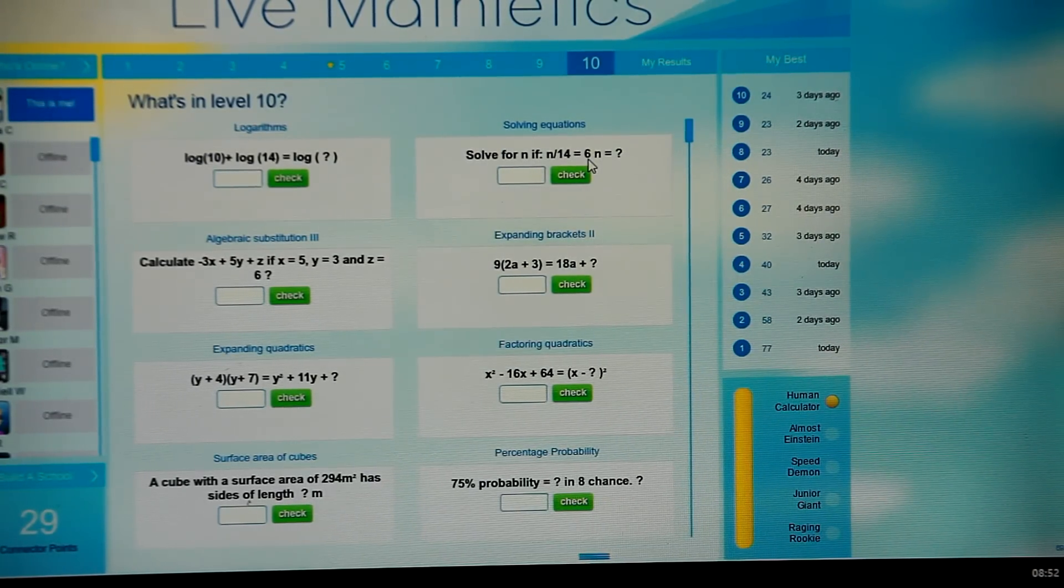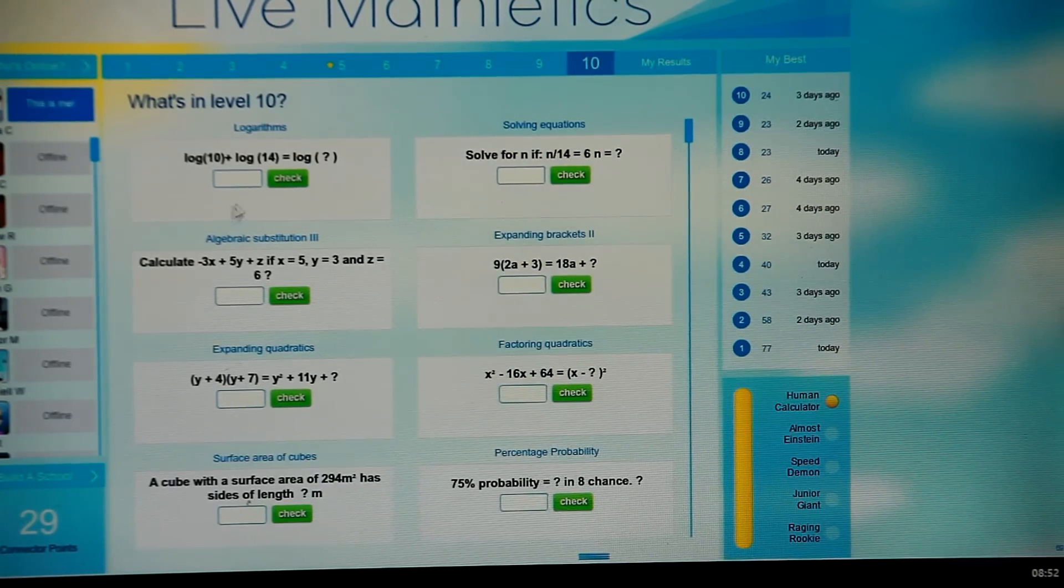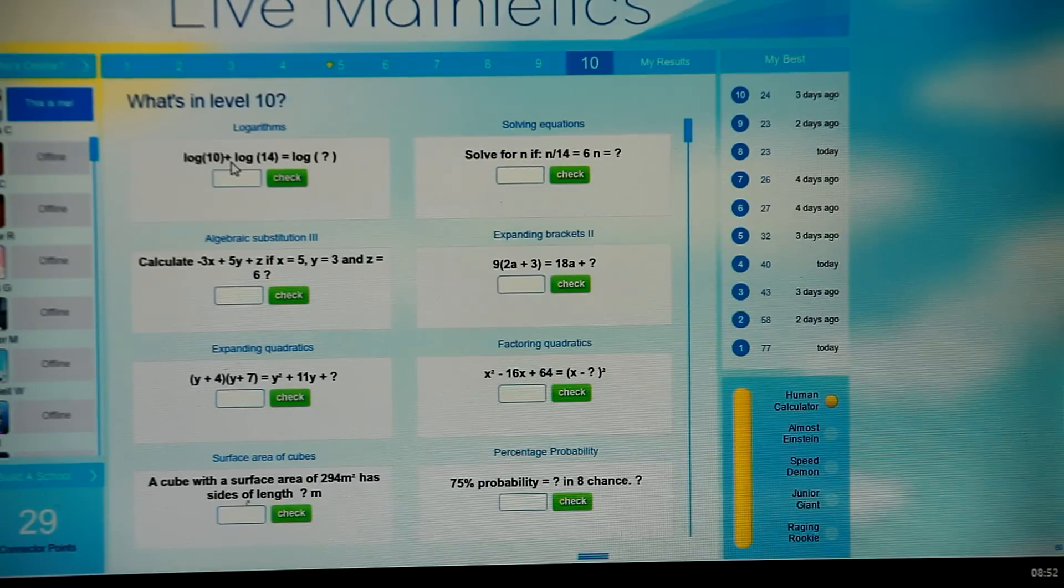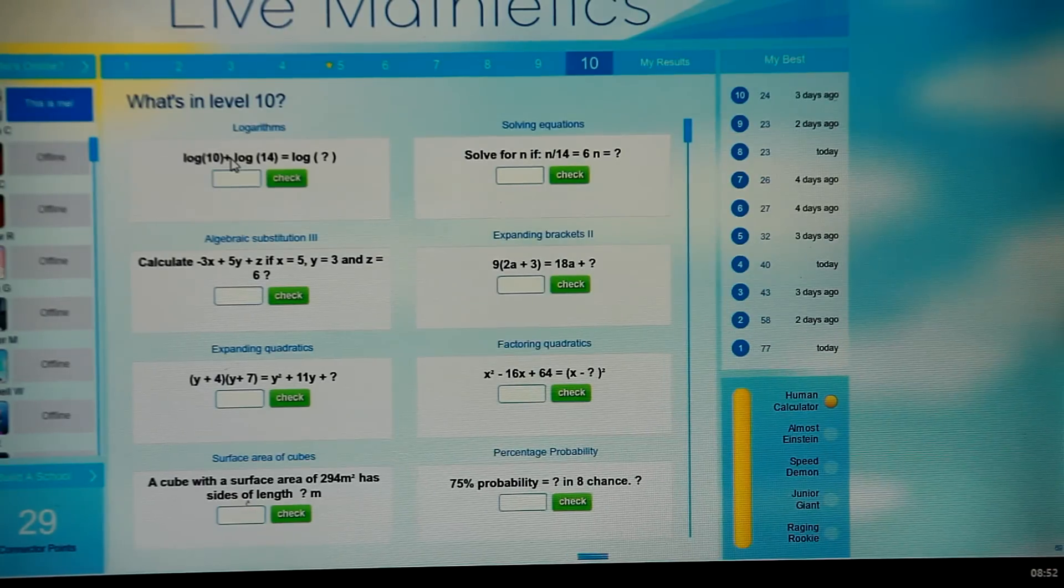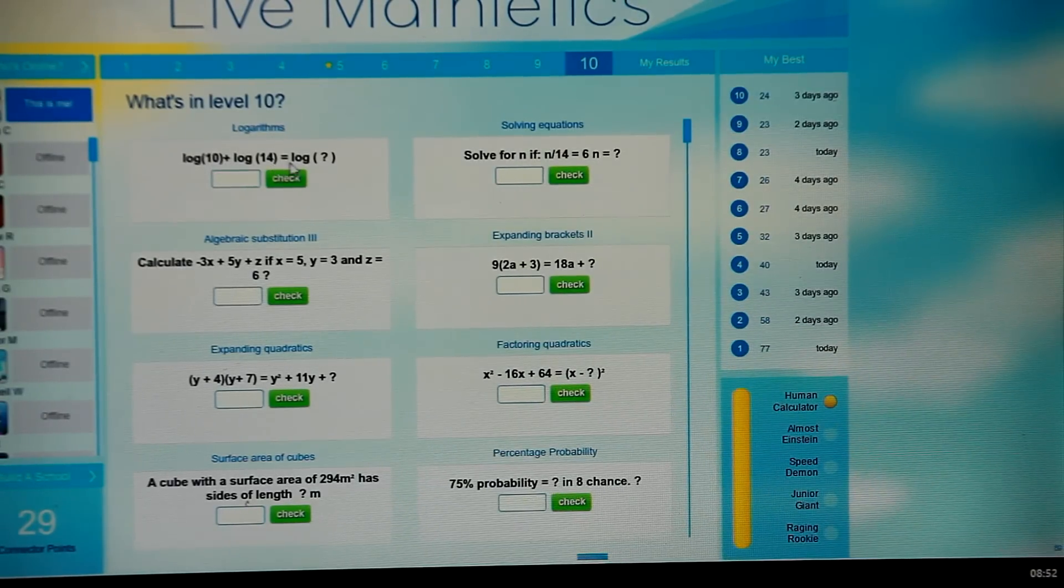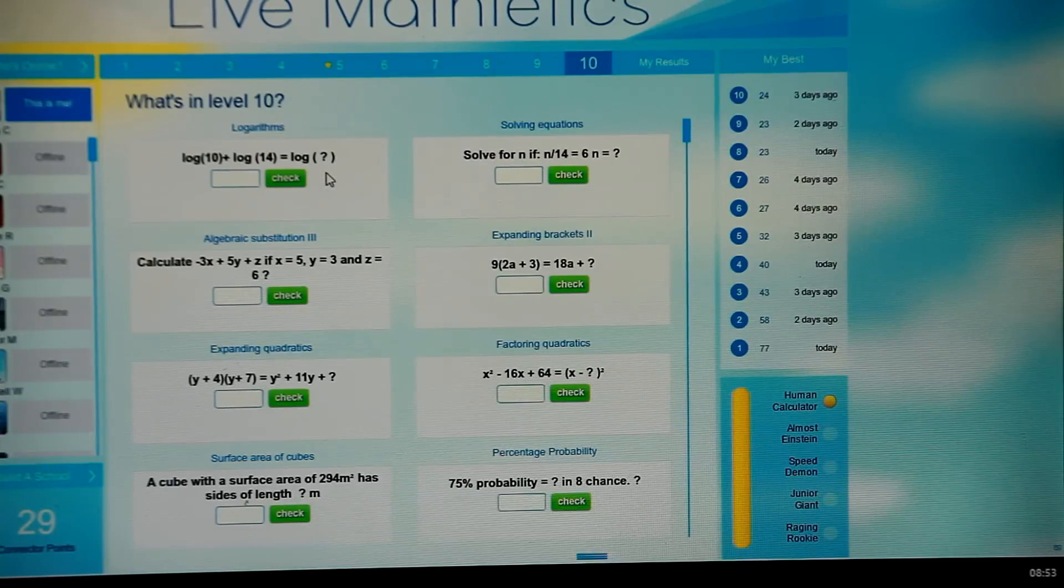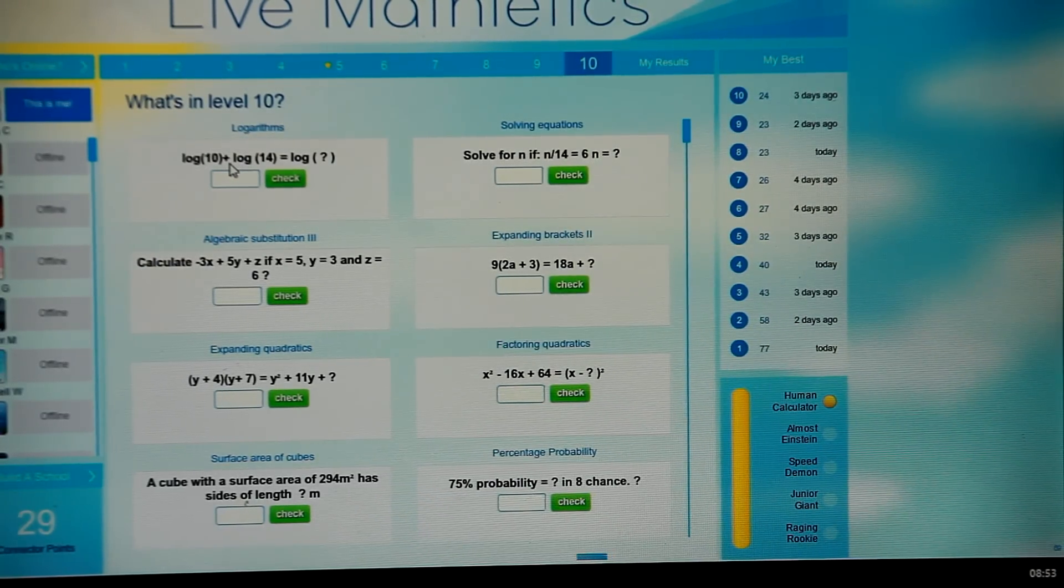Okay, looking here at level 10. When you have logs, you simply think of the multiply sign as being represented by a plus, so that plus equals multiply. If you have a minus, it's divide. So all you have to do is say 10 multiplied by 14 is 140. If it was a minus sign, you just think of it as being a division.